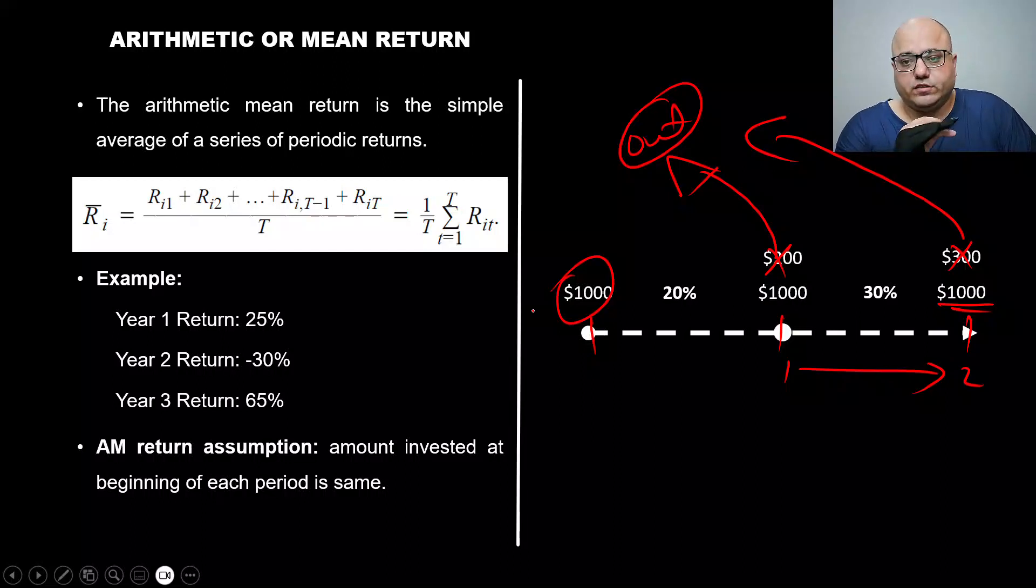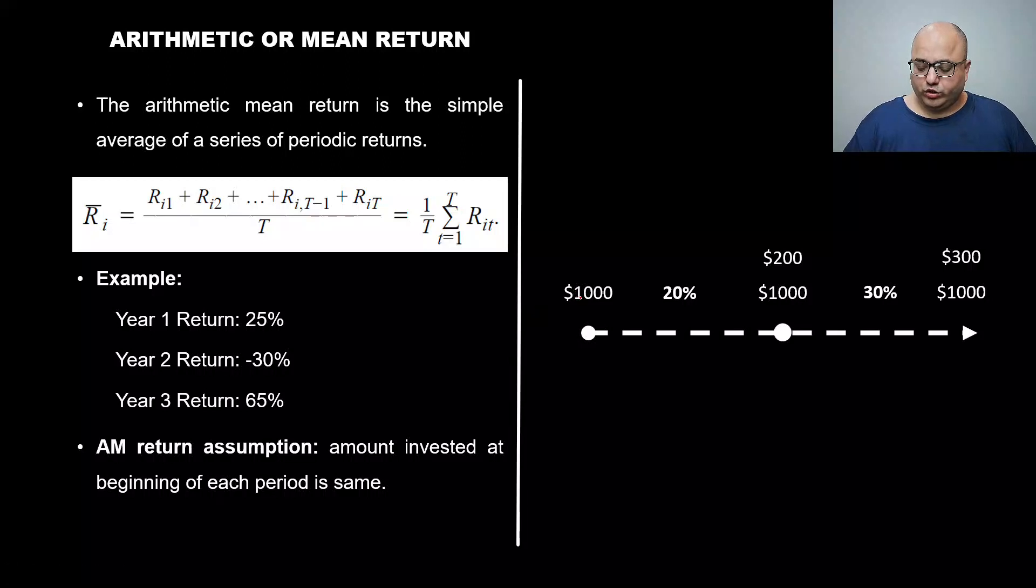This is the basic assumption of arithmetic mean. One more thing to note: we took it out of the investment vehicle between T equals 1 and T equals 2. We're not going to reinvest it. We're not going to inject this into the investment. In other words, our principal is not going to increase. In every period, the principal equals the initial principal, which in this case is $1000.